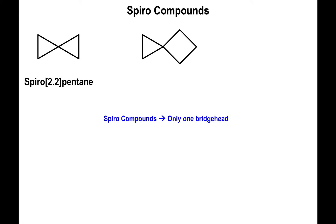When you have spiro compounds with different size rings, instead of doing what we did for bicycloalkanes, we're going to do the opposite — we go in ascending order for the number of carbons. Notice that on the left side of the bridge head we have two carbons, on the right side we have three. So instead of saying spiro 3.2, which is descending order, we go in ascending order: spiro 2.3. Two plus three is five, plus one is six, so this is spirohexane.